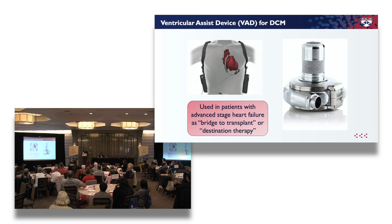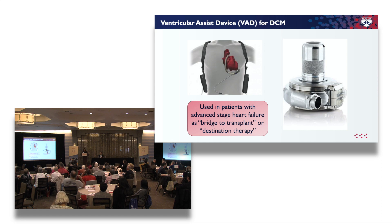If all of those medicines fail and you're still having heart failure, we move to something called a ventricular assist device or heart transplant. A ventricular assist device is a pump placed surgically through open heart surgery. It has a cannula or tube that goes into your left ventricle and takes blood out of your heart and puts it into your aorta — the big blood vessel that carries blood to the rest of the body — essentially taking over the squeezing function of the left side of your heart. Patients either live with this device permanently, which we call destination therapy, or they live with the pump until they receive a heart transplant.